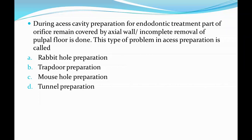The first question: during access cavity preparation for endodontic treatment, part of the orifice remains covered by the axial wall, or incomplete removal of the pulpal floor is done. This type of problem in access preparation is called — the options are: rabbit hole preparation, trap door preparation, mouse hole preparation, and tunnel preparation.